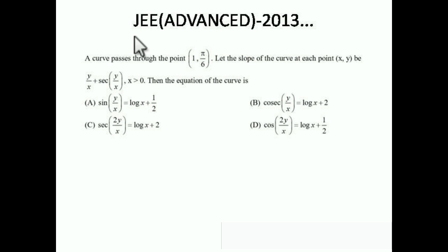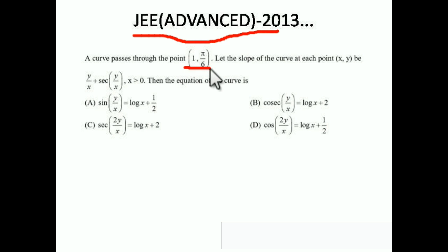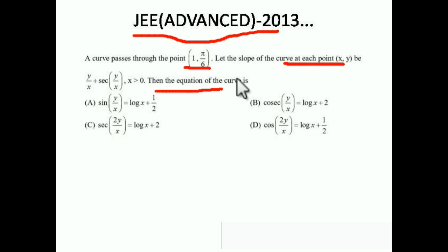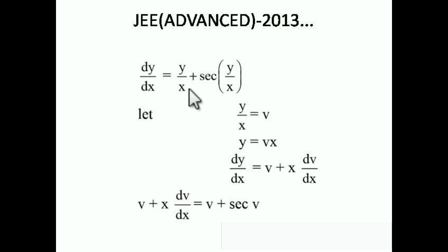This next problem is also from JEE Advanced 2013, from the Differential Equations chapter. A curve passes through the point (1, π/6). The slope of the curve at each point (x, y) is y/x + sec(y/x), where x > 0. Find the equation of the curve. The slope of the curve is dy/dx, so dy/dx = y/x + sec(y/x). We have a point to find the arbitrary constant C.